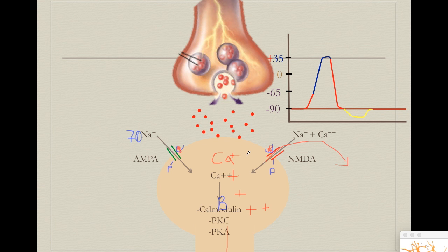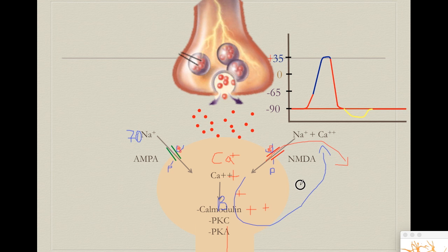Why is adding phosphate groups important? Because once proteins have these phosphate groups, they will start working a lot more. If my AMPA receptor usually lets in, say, seven sodium ions, after the phosphate group is added it might allow in 70 sodium ions. The same applies to the NMDA channel — activation of NMDA and increased intracellular calcium causes the NMDA channel to allow even more calcium and sodium in, creating a positive forward loop.